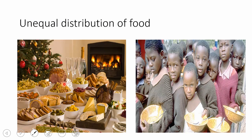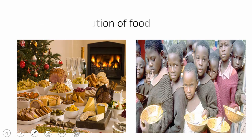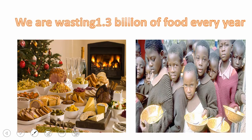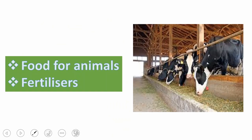On one side you find a table filled with all the food you'd like, and on the other side children are waiting in a queue just to have some food in their plates. This unequal distribution of food is a major issue. 1.3 million pounds of food are wasted every year, while some claim this wasted food could become animal feed or fertilizers. Still, too much food is wasted for no reason while other people are starving, resulting in famine and poverty in some places.